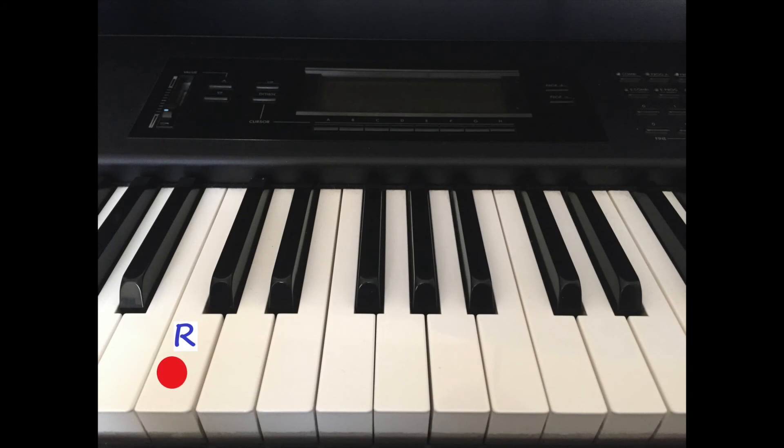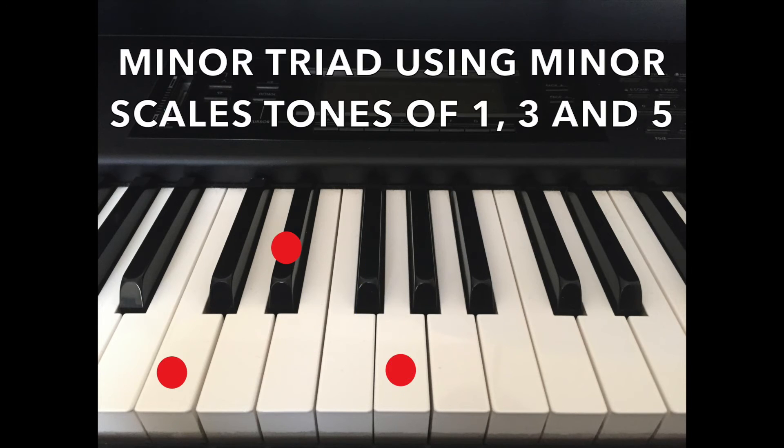Now let's look at the minor triad in C. Start with the root, and we're going to go three semitones up. One, two, three, and hold it down. And count up four semitones. One, two, three, and four. And we hold that note down, and there is our C minor triad.